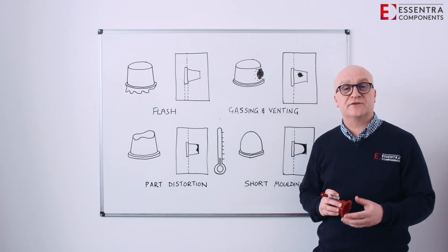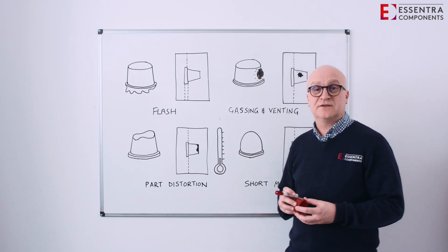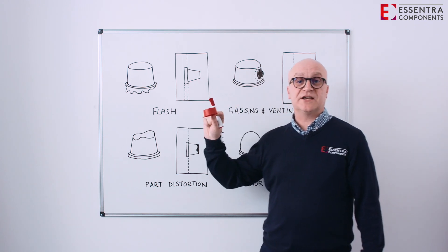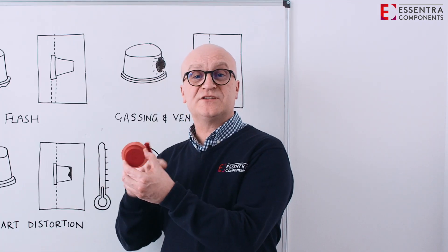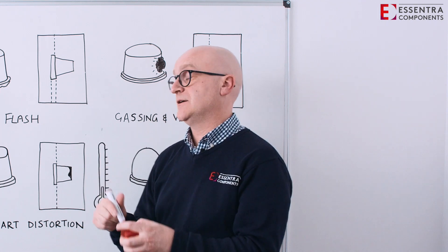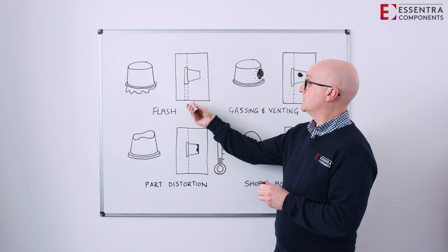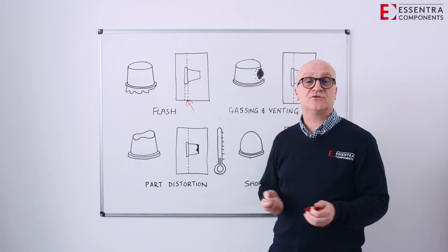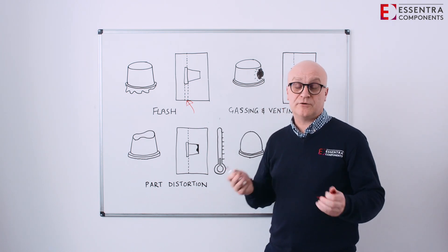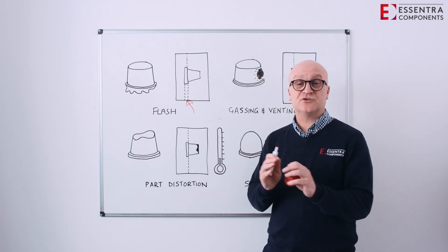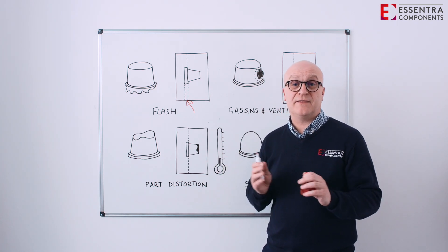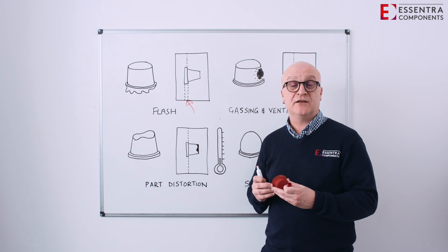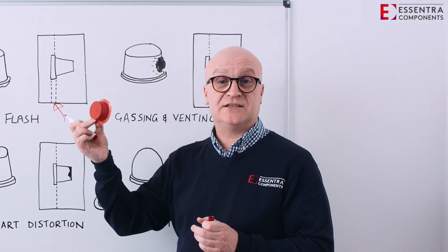The first one we're going to have a quick look at is flash. Flash is when the tool is blown apart on injection, causing a burr of material on the split line. The split line of the tool is extremely important to the design. We have to make sure that we apply enough clamp tonnage whilst we're injecting the material to make sure we don't force the tool apart and therefore create an unnecessary material flow into that area, thus creating a flashed part.